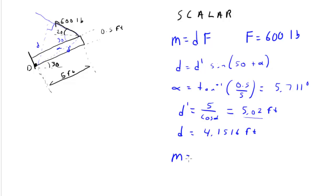That means that D is now 5.02 feet times the sine of 55.711. D is 4.1516 feet. And if you do the multiplication here, you'll get that M is equivalent to 2,490 feet pounds, which we would write as 2.49 kip, or 1,000 pound feet.